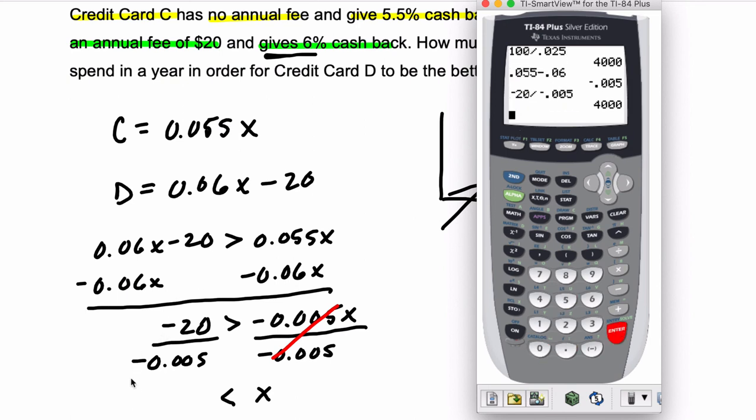That's $4,000. So you have to spend more than $4,000 in order for credit card D to be the better choice.